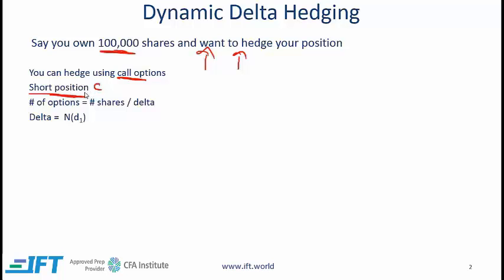The next question is how many call options do you need to go short on? The number of short call options is equal to the number of shares — 100,000 in this case — divided by the Delta. The Delta might be given to you; it is approximately equal to N(d1), which comes out of the Black-Scholes-Merton model.